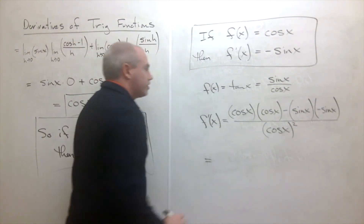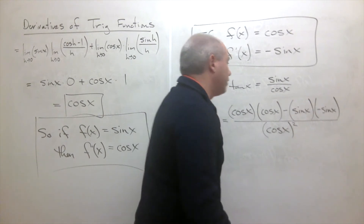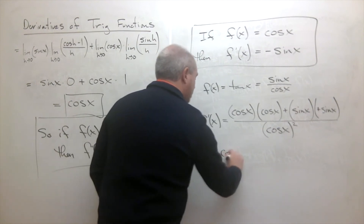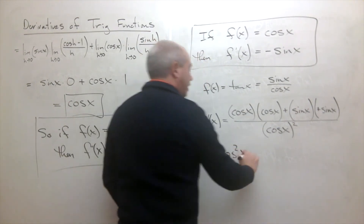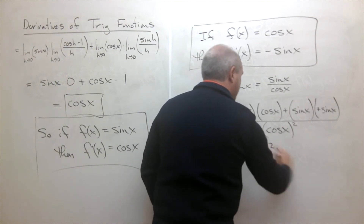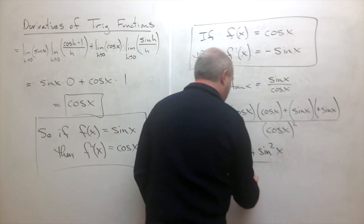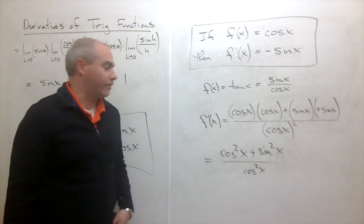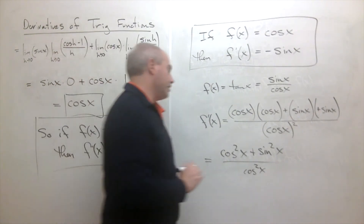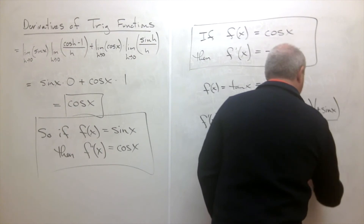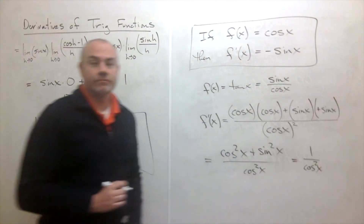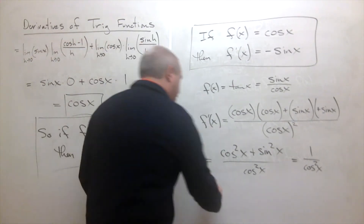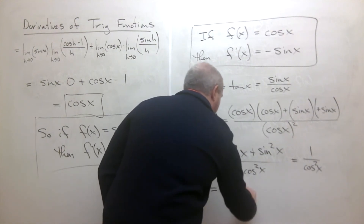We have a negative times a negative, which makes it positive, giving us cosine squared of x plus sine squared of x, all over cosine squared of x. But sine squared of x plus cosine squared of x always equals one, so this simplifies to one over cosine squared of x.